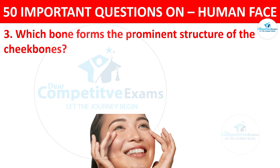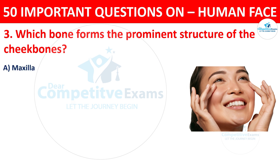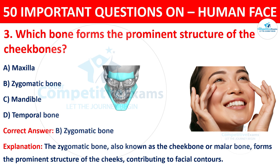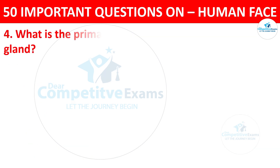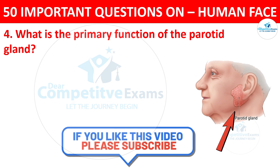Question number three: which bone forms the prominent structure of the cheekbones? The options are maxilla, zygomatic bone, mandible, or temporal bone. The correct answer is B, zygomatic bone. The zygomatic bone, also known as the cheekbone or malar bone, forms the prominent structure of the cheeks, contributing to facial contours.